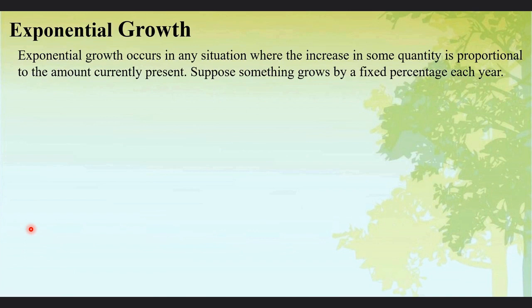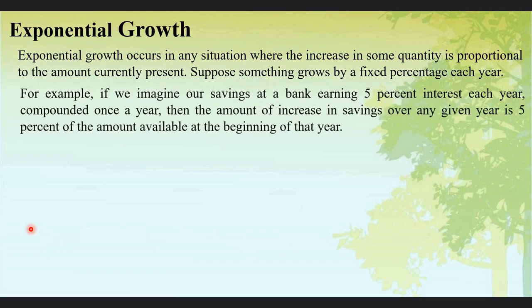Now, what is exponential growth? Exponential growth occurs in any situation where the increase in some quantity is proportional to the amount currently present. Suppose something grows at a fixed percentage each year. For example, if we imagine our savings at a bank earning 5% interest each year compounded once a year, then the amount of increase in savings over any given year is 5% of the amount available at the beginning of that year.